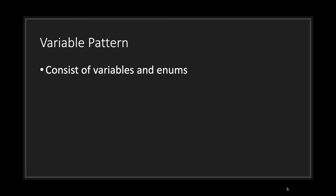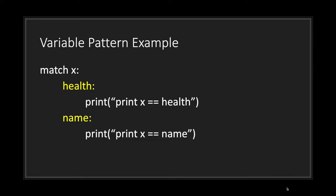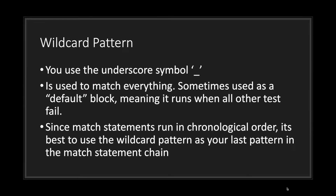Next you have the variable pattern. Just as the name implies, you're using a variable or enum to represent your match pattern. Looking at the print statement, we're trying to match the pattern: if X is equivalent to health, and for the name, if X is equivalent to name — again very straightforward.